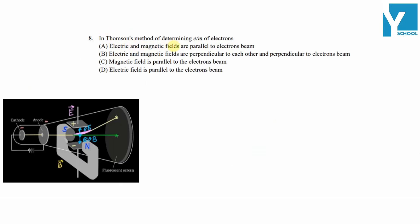In Thomson's method of determining e/m of electrons, option A is electric and magnetic fields are parallel to the electron beam. Option B is electric and magnetic fields are perpendicular to each other as well as perpendicular to the electron beam. Option C is magnetic field is parallel to the electron beam, and option D is electric field is parallel to the electron beam.